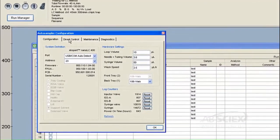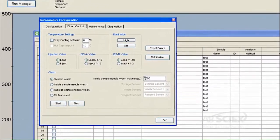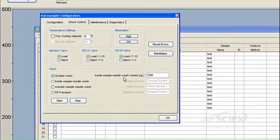In the Auto Sample Configuration window, click the Direct Control tab and select the System Wash radio button in the Wash group of the Auto Sample Configuration window.